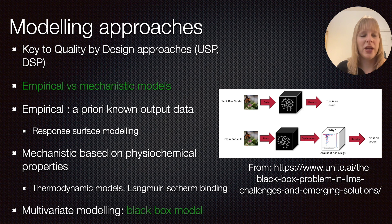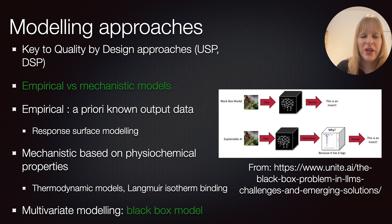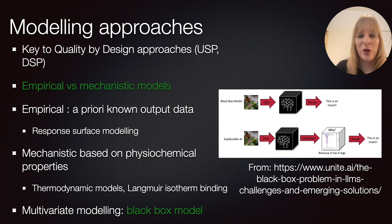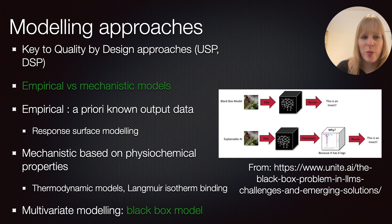It's also difficult to find someone with skill sets in both modelling and experimental work. However, modelling approaches are key to what we call quality by design, working across upstream and downstream processes. One type is an empirical model, where you use some a priori known output data — meaning you need data available in order to perform your modelling. An example is response surface modelling.